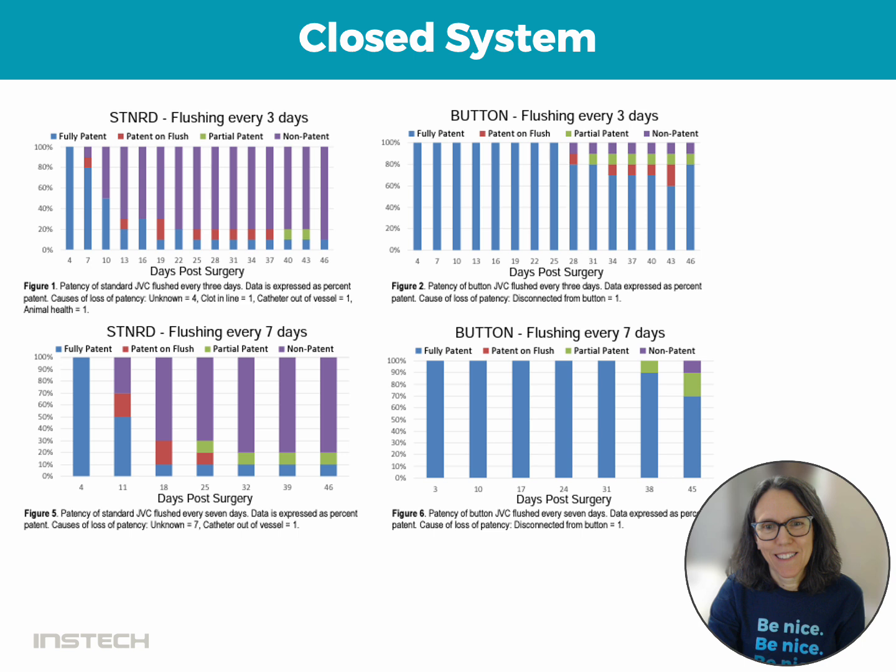On the left-hand side, we have mice with exteriorized catheters, and on the right side, we have mice with the button. The top two graphs are a flushing schedule of every 3 days, which is recommended with mice with exteriorized catheters and an open system. At the bottom, we have flushing of every 7 days, which is recommended for the VAB in a closed system.